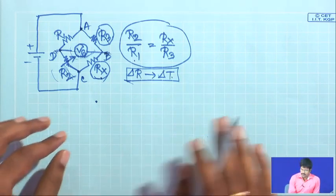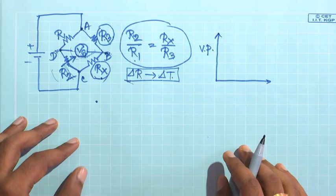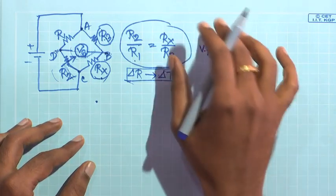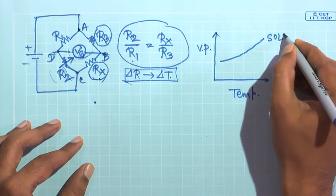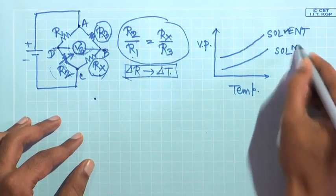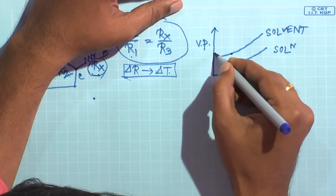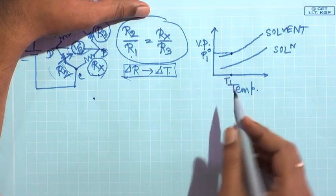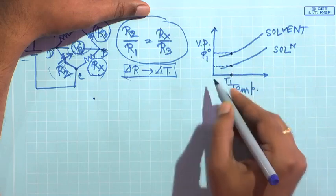Let us go into the details. The vapour pressure of a particular solvent decreases when you have a solute present. If we plot vapour pressure on the y-axis against temperature on the x-axis, we can show the variation for the pure solvent and for the solution. At a temperature T1, P1_0 is the vapour pressure of the pure solvent. At that temperature, if you have a solution, the vapour pressure decreases to P1.